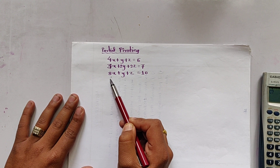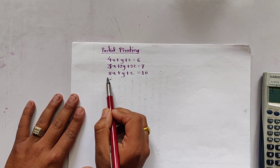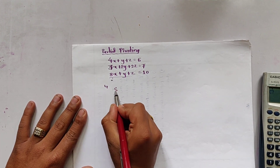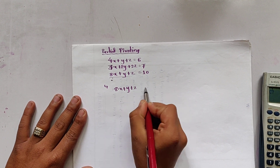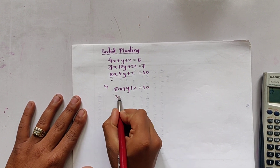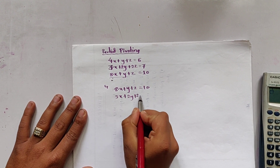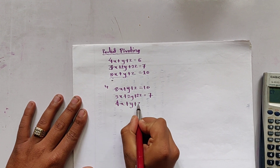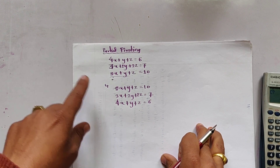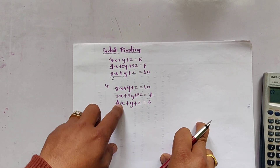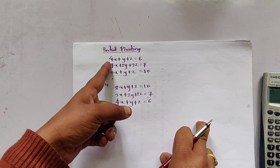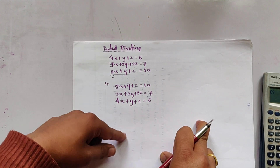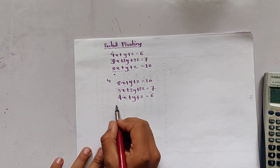So we interchange the equation with coefficient 8 to the top. The rearranged equations become: 8x + y + z = 10, then 3x + 2y + 2z = 7, then 4x + y + z = 6. We arranged the equations by considering the largest coefficient of x, which is 8, and moved it upward. Now we write the augmented matrix.